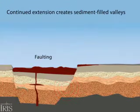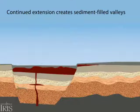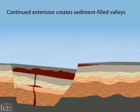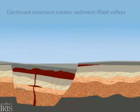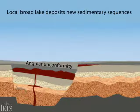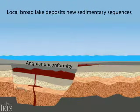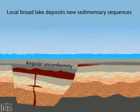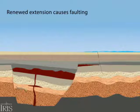Sediment eroded from highlands out of view creates an angular unconformity over the faulted layers. An invading inland sea precipitates limestone. Renewed extension causes faulting.